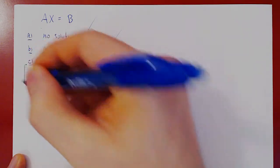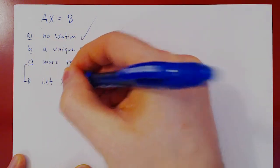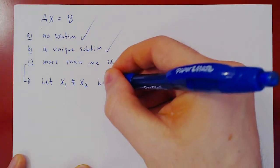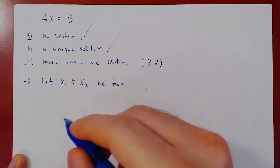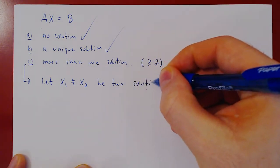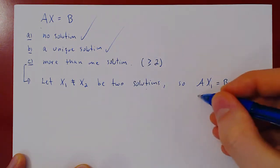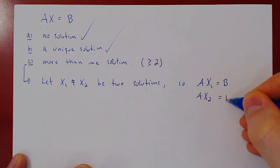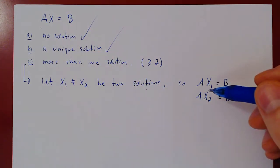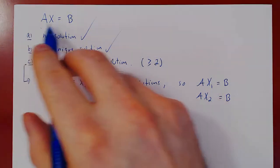We assume that we are in case C, so we have more than one solution — therefore there are two or more. Let x1 be different from x2, as two solutions, under the assumption that we have two or more solutions. What does that mean? Well, A times x1 is equal to b, and A times x2 is also equal to b, as both x1 and x2 solve the equation A times x equals b. The idea now is, from these two solutions, we will construct an infinite number of solutions to the equation A times x equals b.